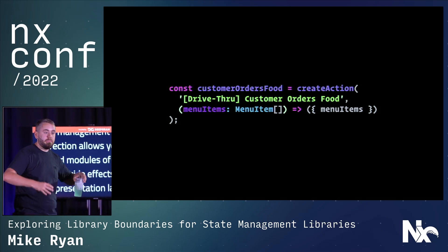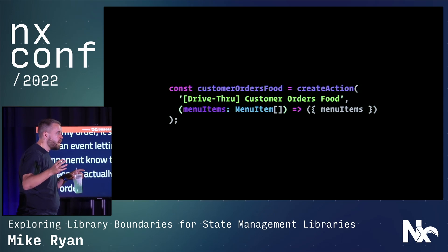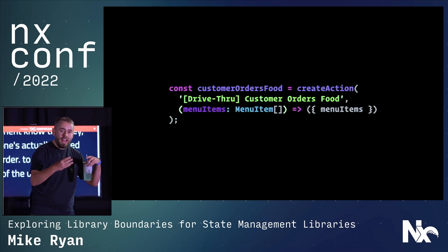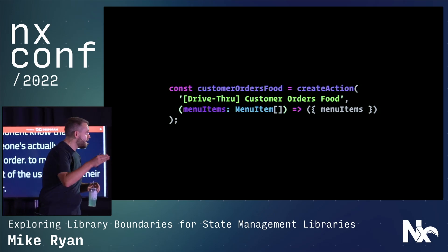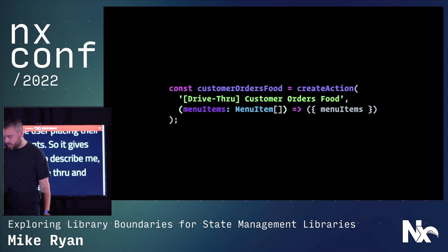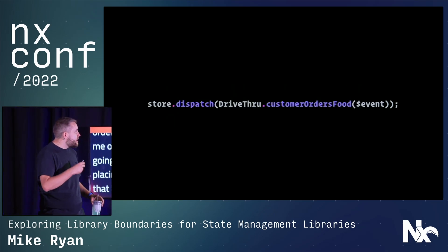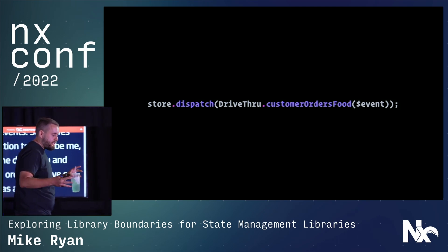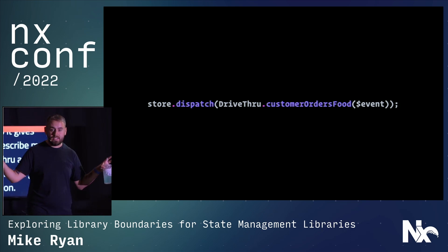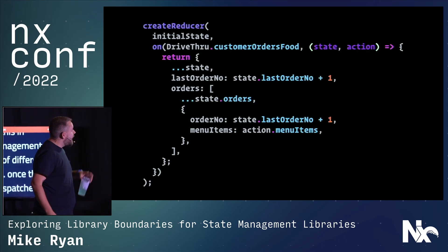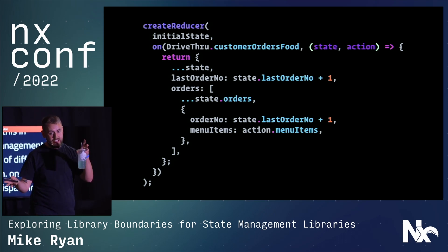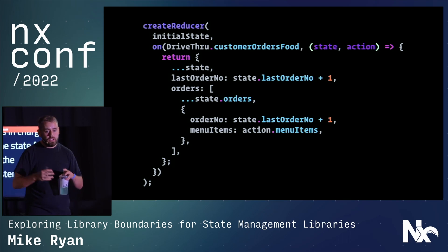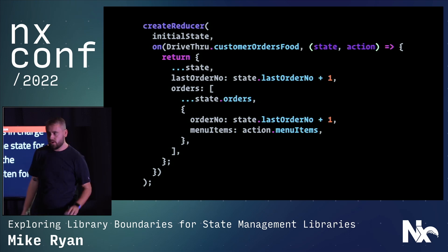Because this is Redux or NGRX or VueX, we need an action to dispatch to model this event of the user placing their order. These state management libraries highly recommend that you model all your actions as events. So there's going to be one action to describe me going through the drive-through and placing an order. From there, that component is going to dispatch that to our global store. The reducer, which is in charge of managing all the state for orders inside of the restaurant, can listen for this particular action and update state to notify everyone else in the application that there's a new order ready to be fulfilled.